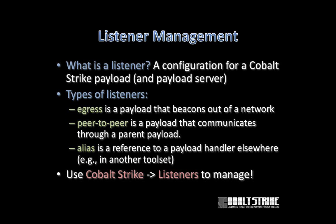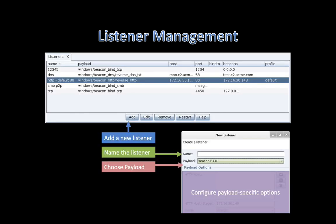To manage listeners, go to the Cobalt Strike menu and click Listeners. This is the listener management interface. Here you will see a table with a summary of configured listeners. Press Add to add a new listener. When you see the new listener dialog, make sure you give your listener a name — the name is very important because it is what your teammates will see. The name should be descriptive enough that teammates know the purpose and performance limitations of the listener. When you select a payload type, the dialog will change to show payload-specific options.